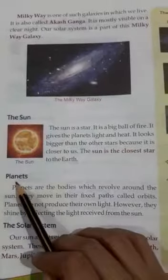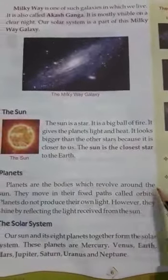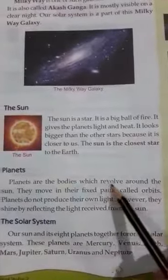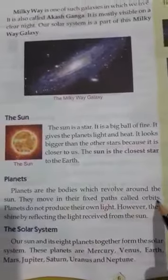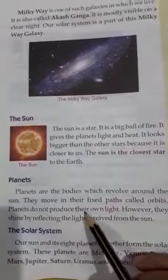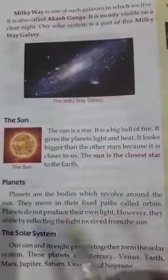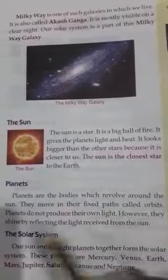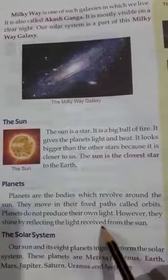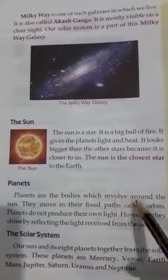Next topic: Planets. Grah. Planets are the bodies which revolve around the sun. Grah surya ke chaaron or ghoomne wale pind hain. They move in their fixed paths called orbits. Ve apne nirdharit kakshaon mein chalte hain. Planets do not produce their own light. Grah apne swayam ke prakas ka utpadan nahin karte. However, they shine by reflecting the light received from the sun. Surya se prapt prakas ko ve paravardit karte hain.